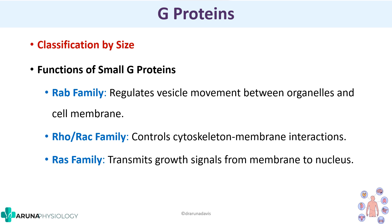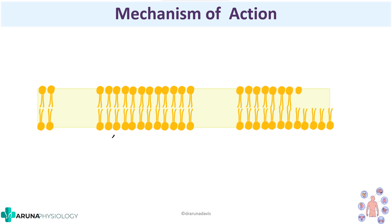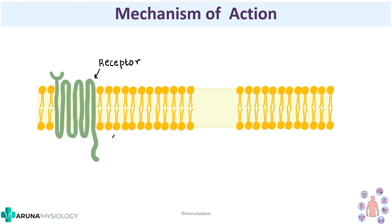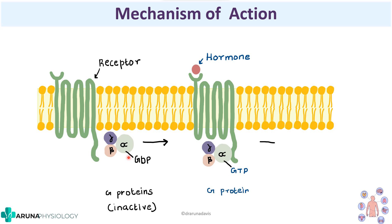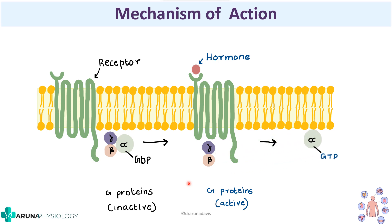Now we will see the mechanism of action. Suppose this is a cell membrane with a G-protein coupled receptor. The G-proteins are in an inactive state because the alpha subunit is linked with GDP. Once a hormone binds onto this G-protein coupled receptor, GDP is converted to GTP, which means the G-protein is now active. Once the G-proteins are activated, the alpha subunit will dislocate and cause activation of other enzymes, and that is how hormone binding causes signal transmission.